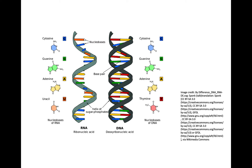Another difference between DNA and RNA is in the composition of their nitrogenous bases. In general, there are four different types of nitrogenous bases: adenine, guanine, cytosine, and in DNA, thymine. But in RNA, instead of thymine, you have uracil. So both DNA and RNA have cytosine, guanine, and adenine, but DNA has thymine and RNA has uracil instead.